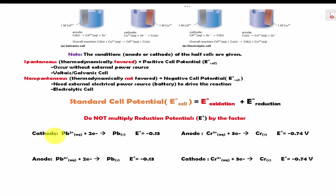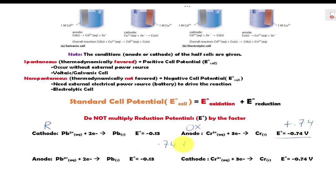Here the cathode is made of lead — this is reduction — and the anode is made of chromium, which is oxidation. The cell potential for the chromium oxidation is reversed to positive 0.74. Adding the oxidation value of positive 0.74 plus the reduction value of negative 0.13 gives us 0.61 V. Since this is positive, it is a spontaneous reaction.